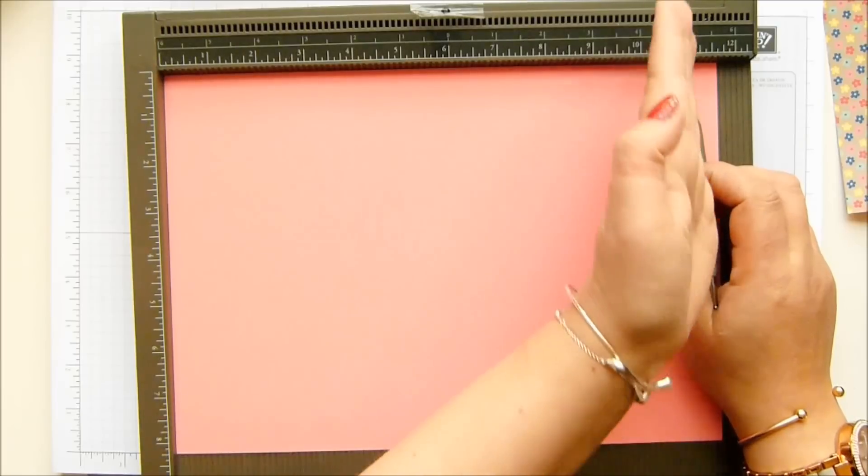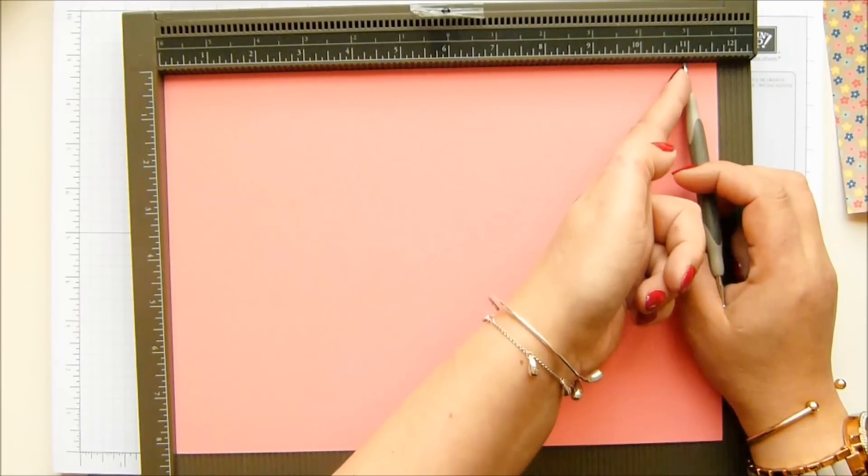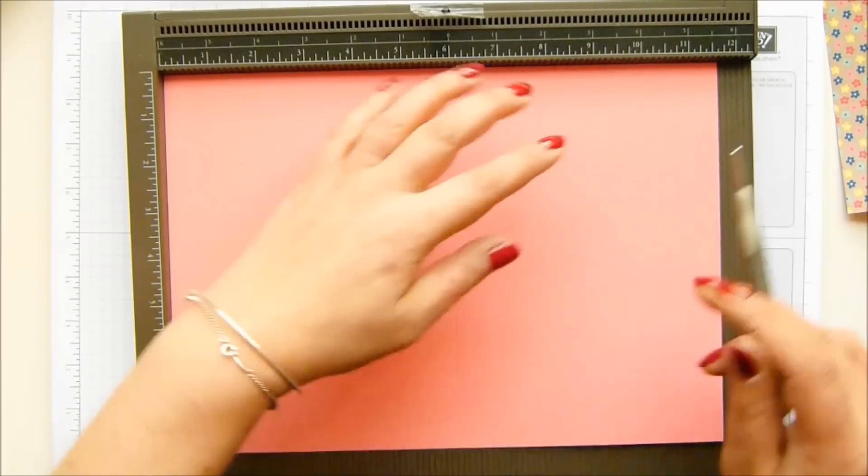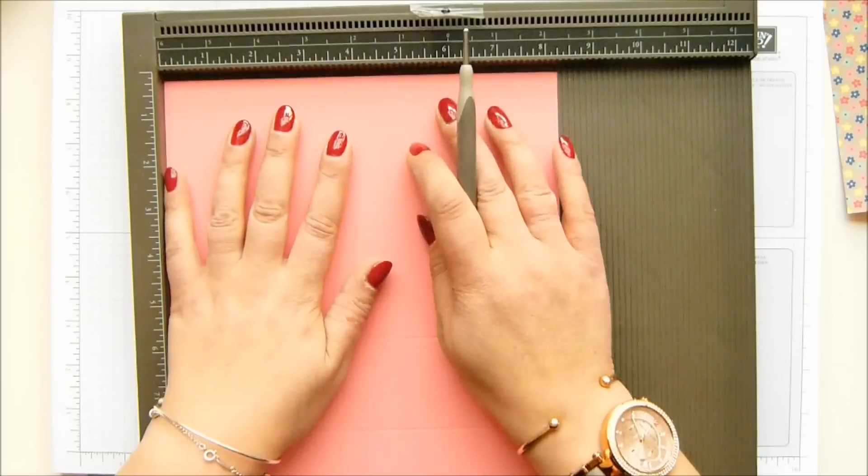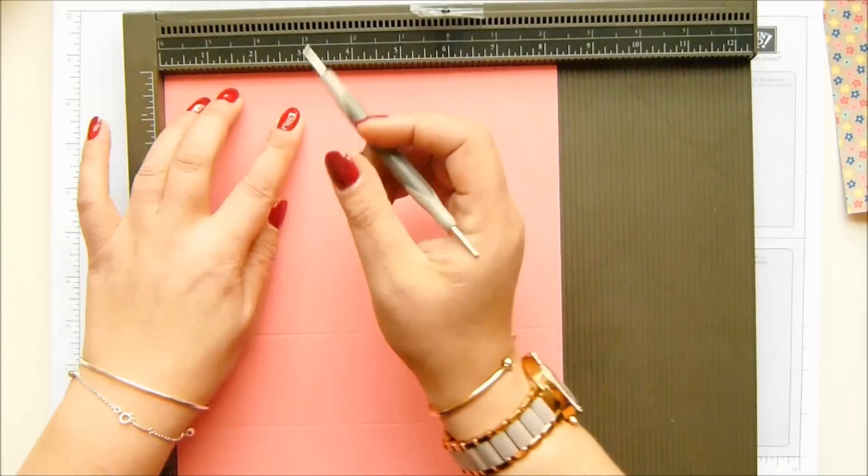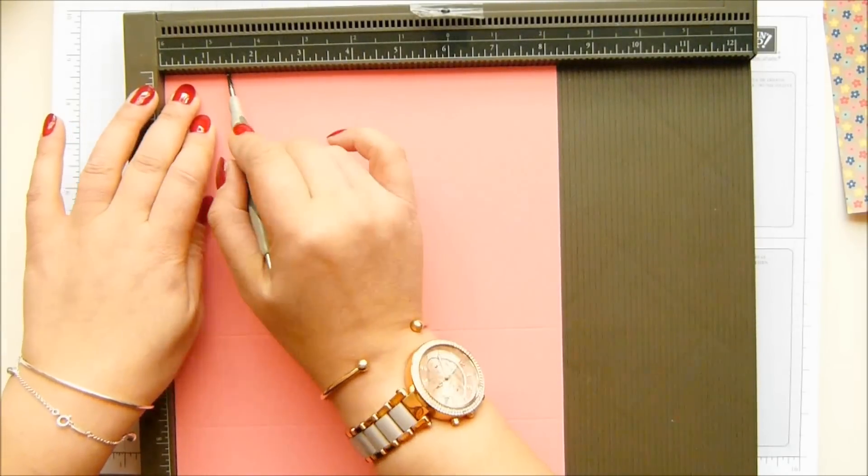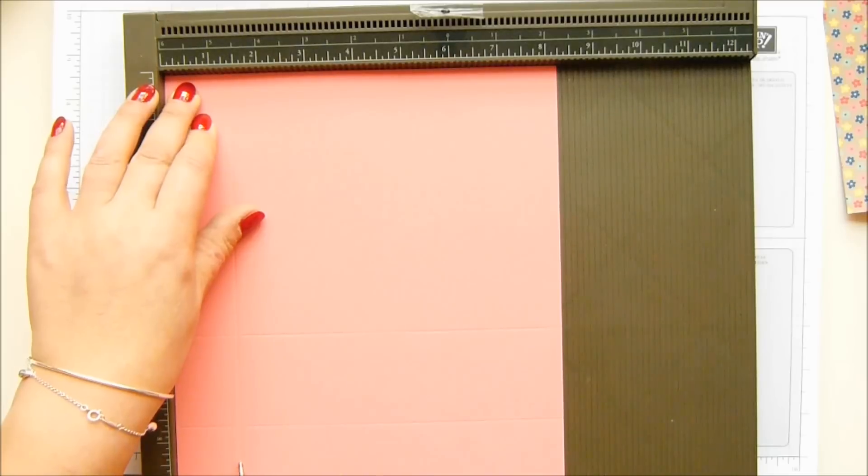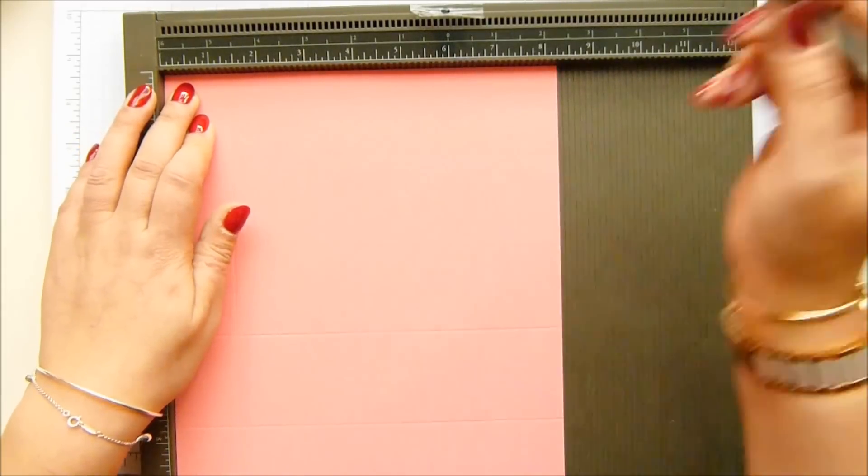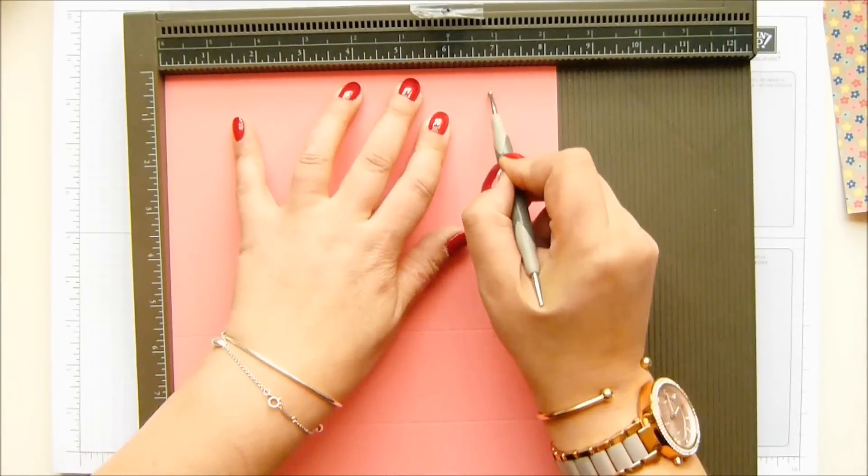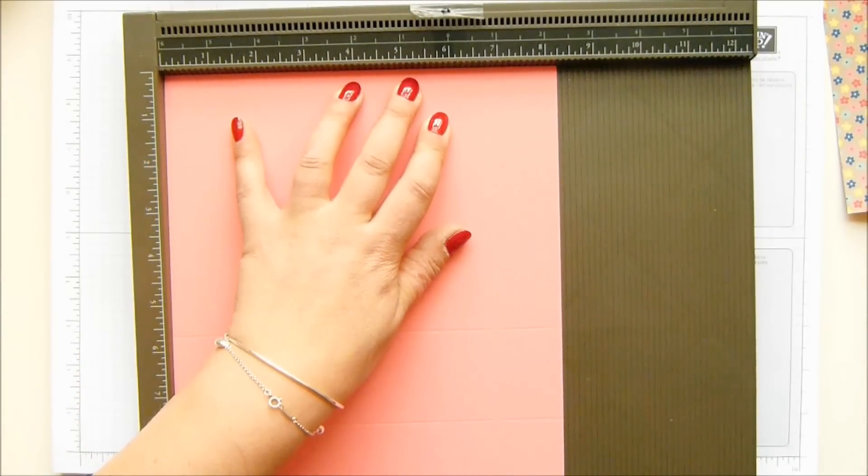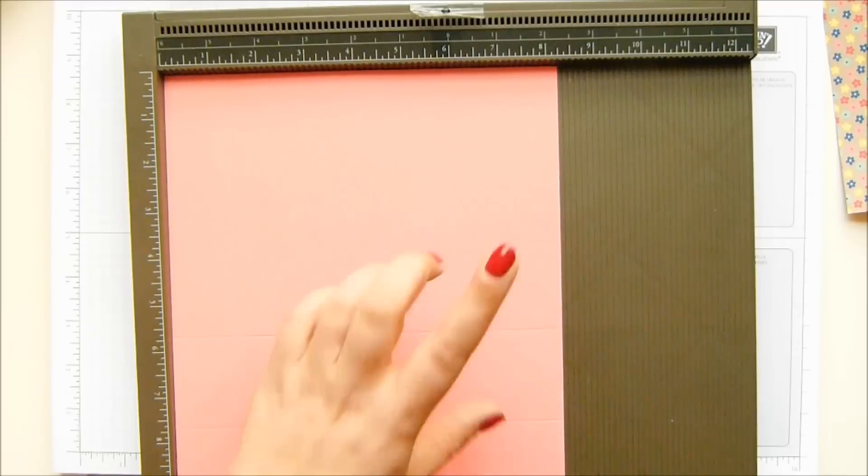As I said, those of you who are working with eleven inch cardstock, it's just going to be that little bit of difference. And then turn it around. On the short side, you're going to score it at one and three eighths of an inch and six and seven eighths of an inch, which in metric is three and a half and seventeen and a half centimeters.